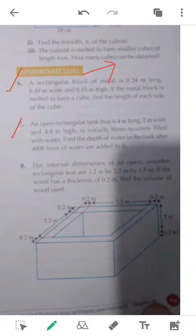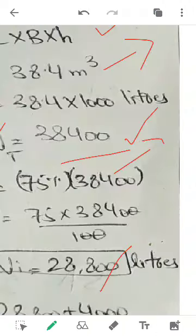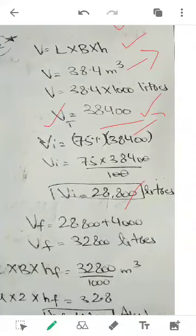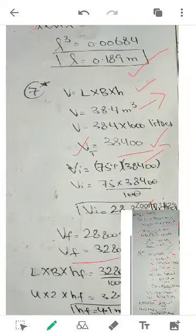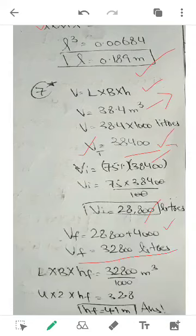Now what he has said, find the depth of the water in the tank after 4,000 liters of water are added to it, means at the moment it has this much amount of water in it. You will add 4,000 liters more. So this is the volume of the tank at the moment we are having. Now you will put the formula of the volume again. What is the formula of the cuboid, length into breadth into height, and VF is actually showing the final volume.